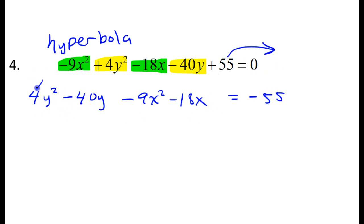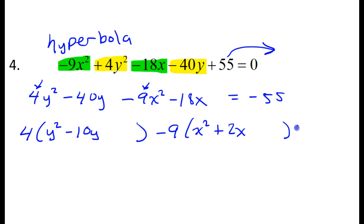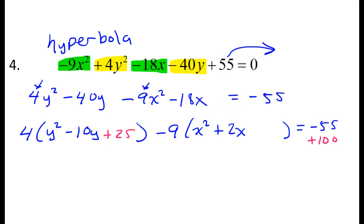I need to factor out the 4 outside of parentheses — in other words, divide by 4 — so I will have y squared minus 10y. I need to factor out the negative 9 outside of parentheses, dividing by negative 9, which gives me plus 2x. Leave space to complete the square, and this equals negative 55. Half the middle squared for the y terms: half of negative 10 is negative 5, square it to get 25. But this is really 4 times 25, which is 100, so I add 100 to the other side.